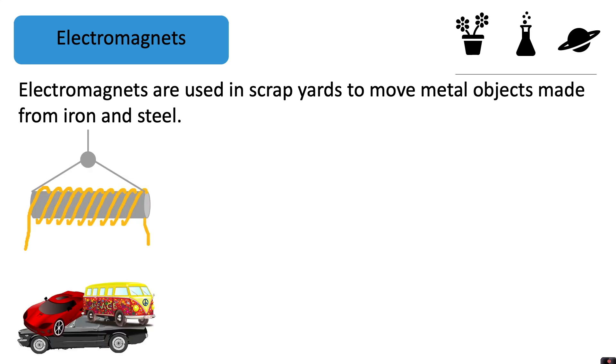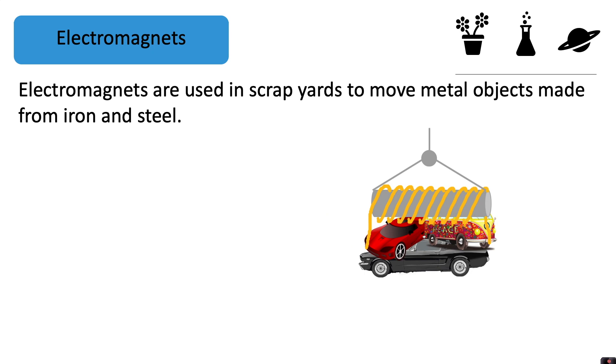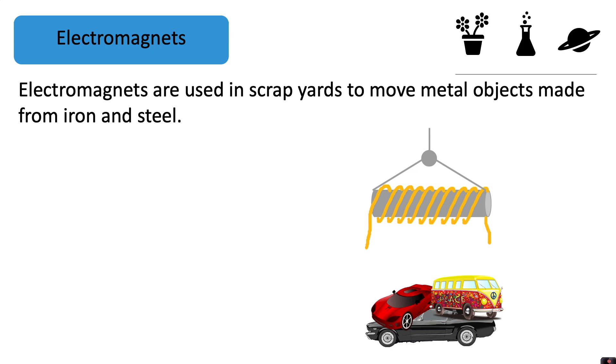It would turn the electromagnet on to attract the objects it wanted to lift and move them to somewhere else. To drop the objects again, all you need to do is turn off the electromagnet. Then it loses its magnetism and the objects can be dropped where you want them to be.